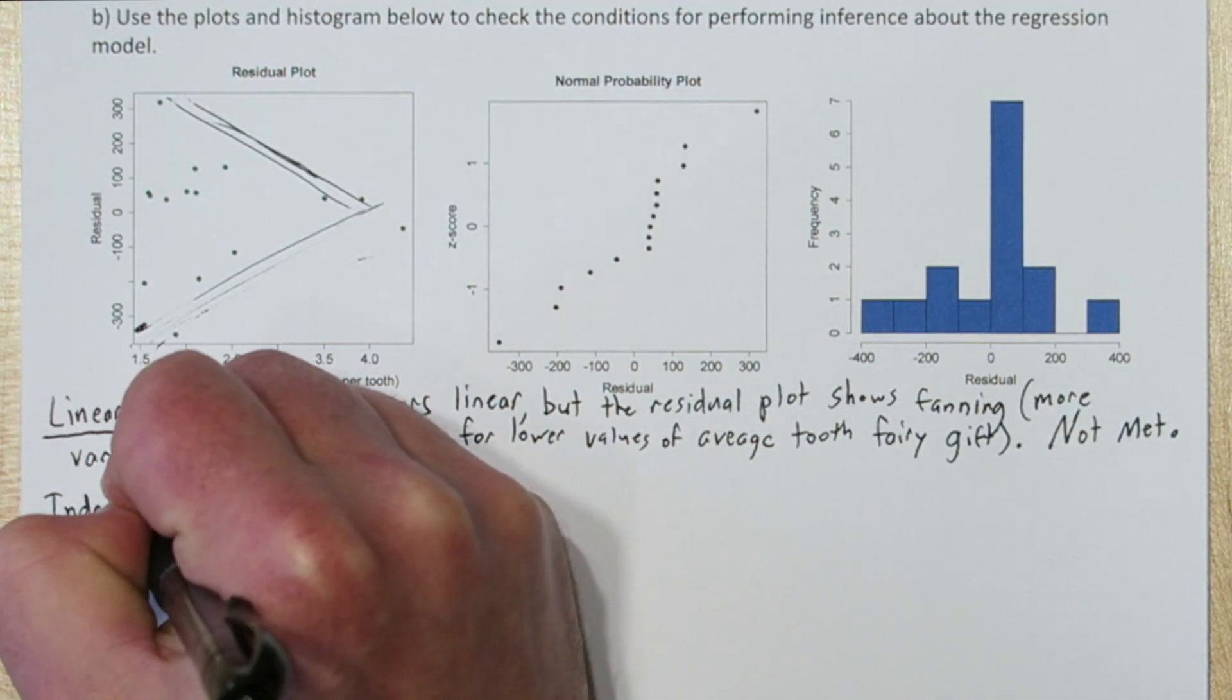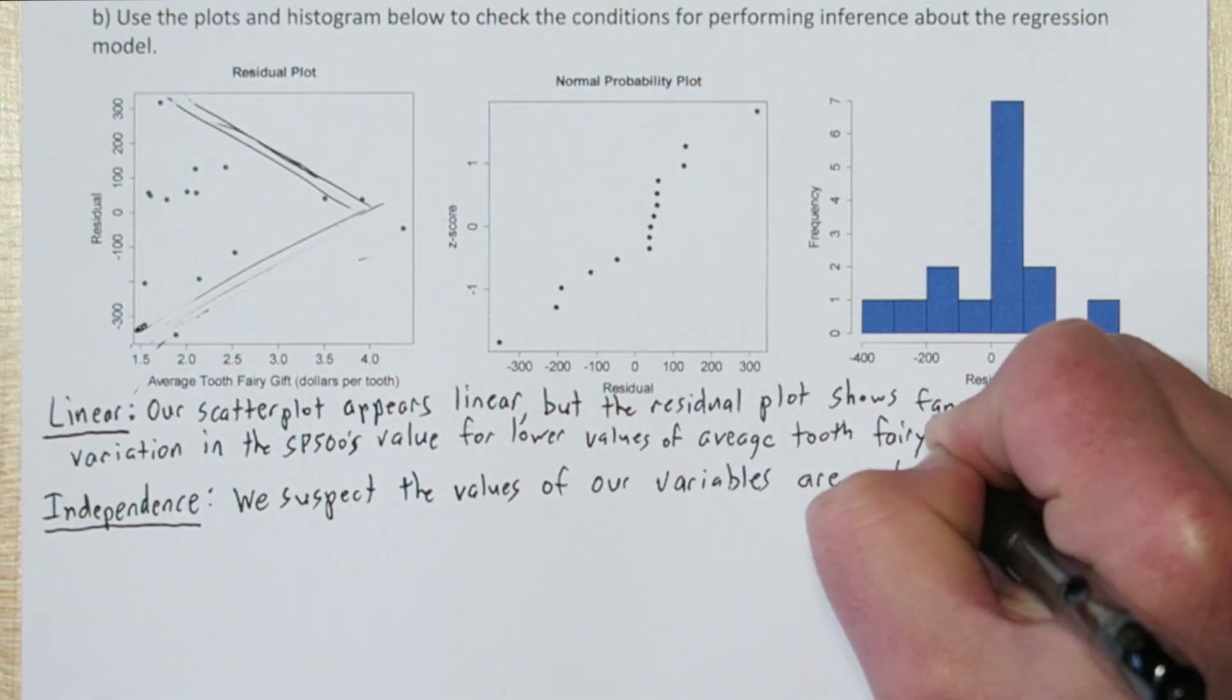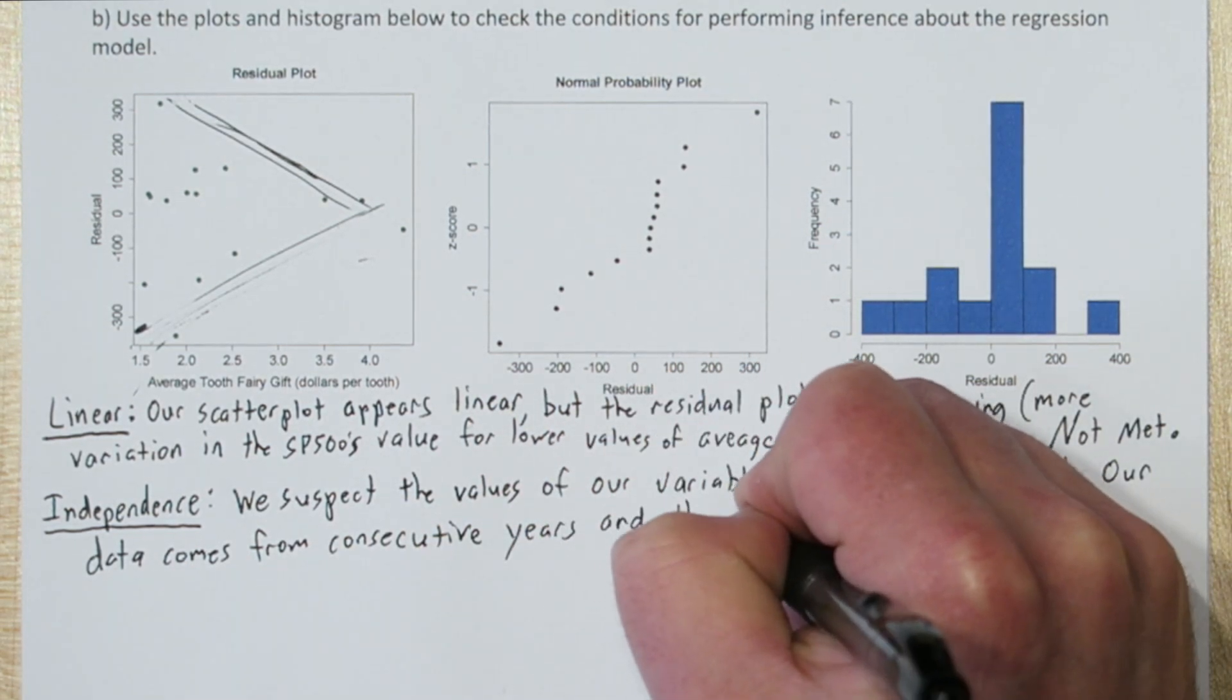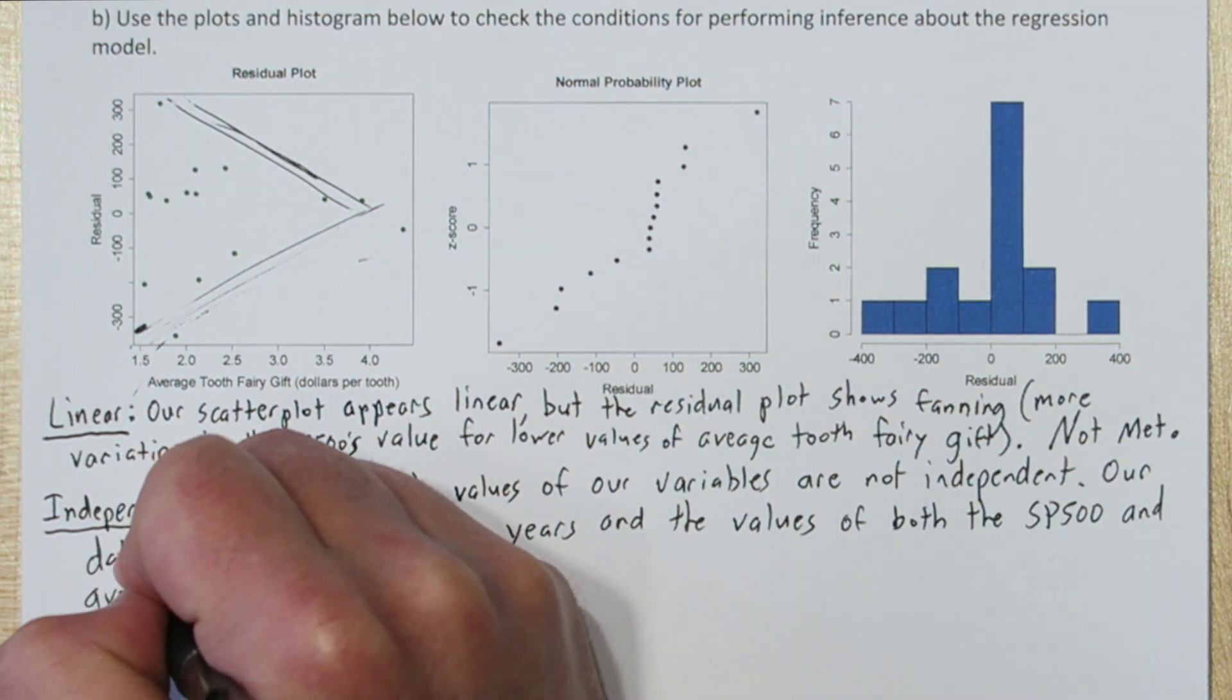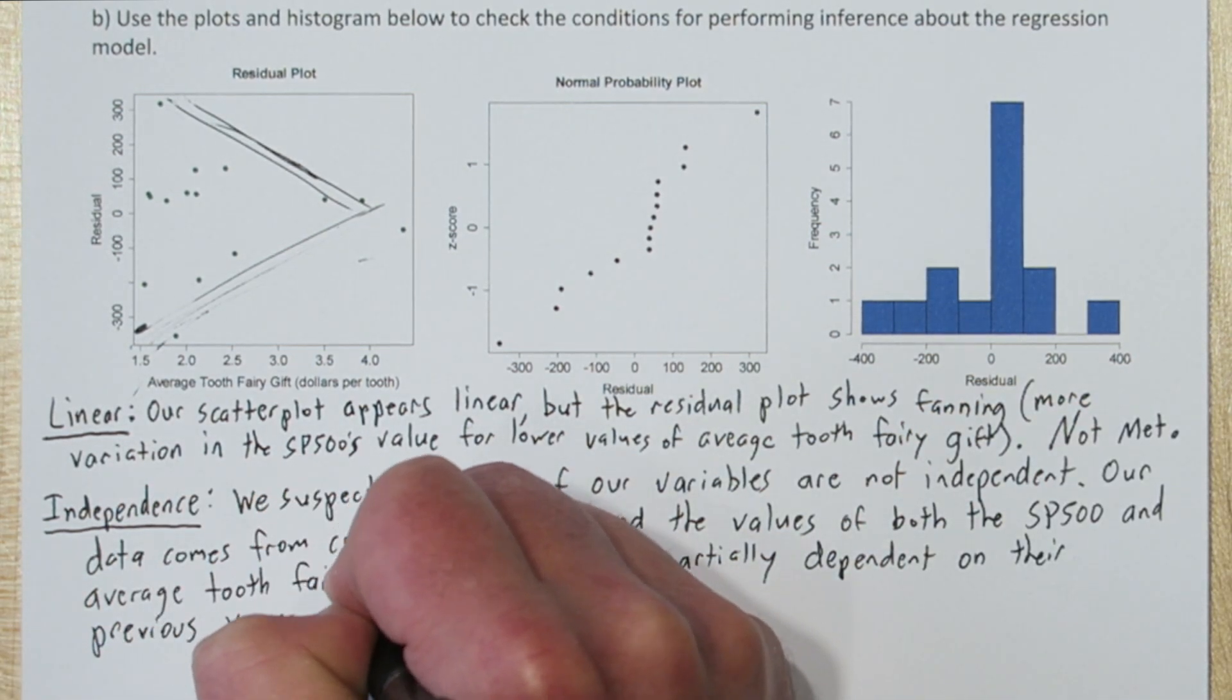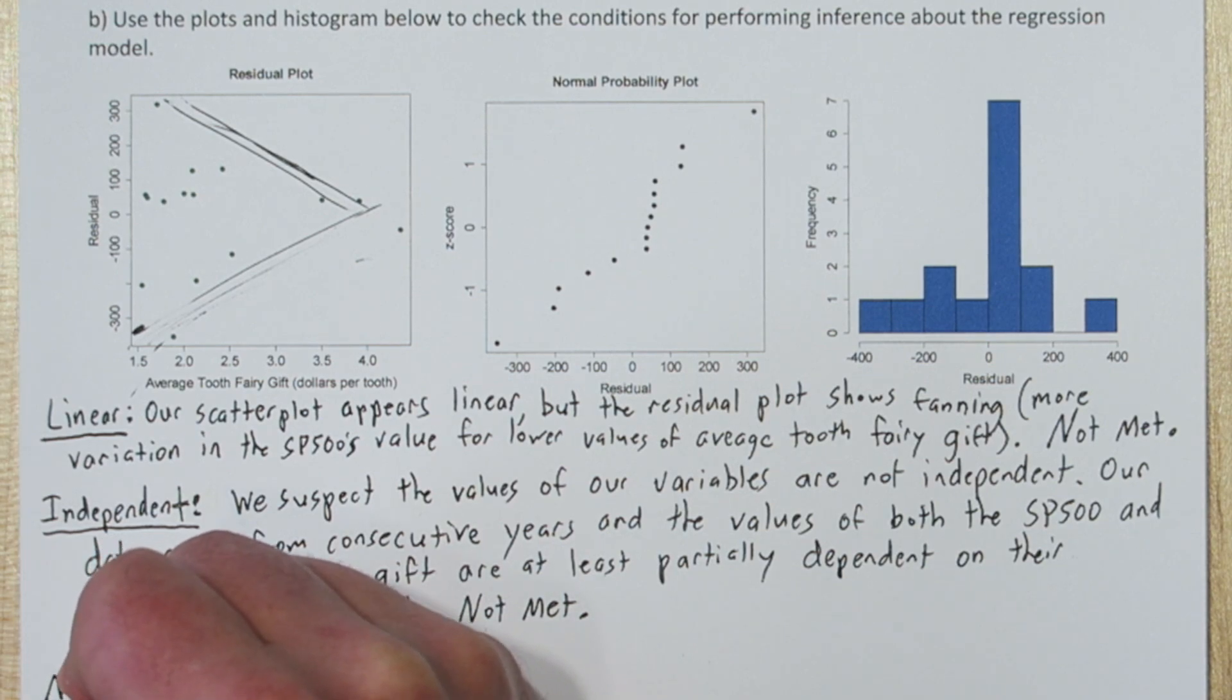The next is the independent condition. We suspect the values of our variables are not independent. The problem is our data comes from consecutive years, and the values of both the S&P 500 and average Tooth Fairy gift are at least partially dependent on their previous year's value. When times are good, we expect consecutive years of the S&P 500 to be high values, and that's likely what's happening with average Tooth Fairy gift as well.